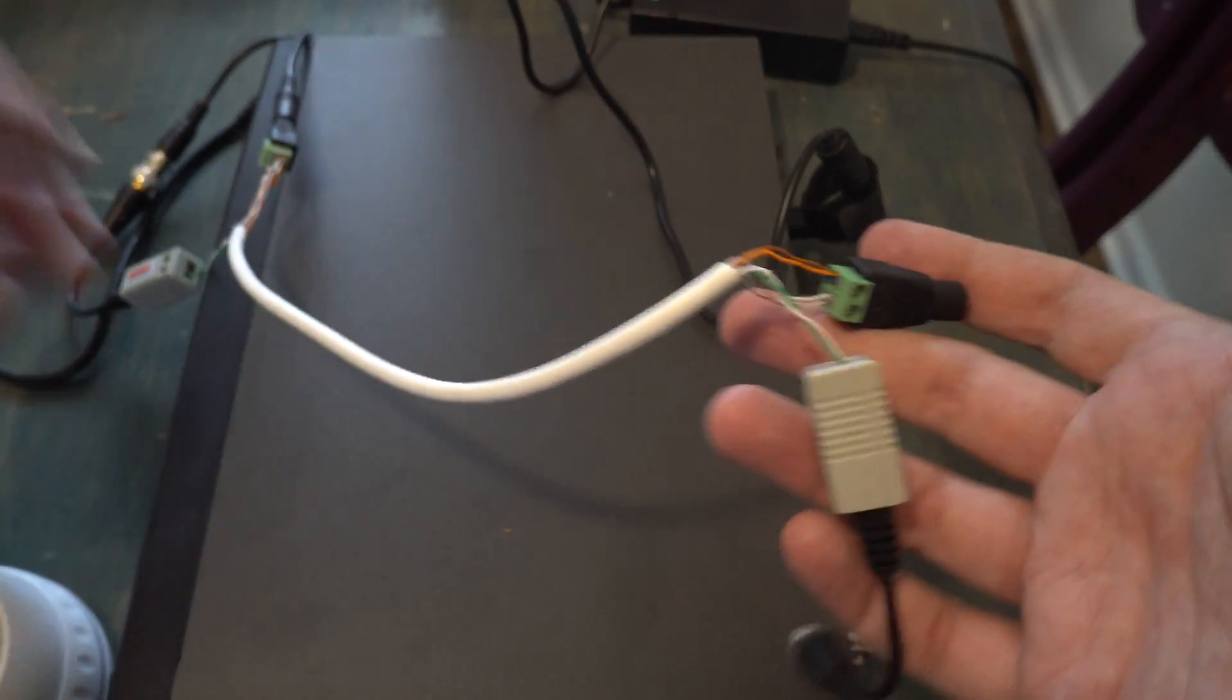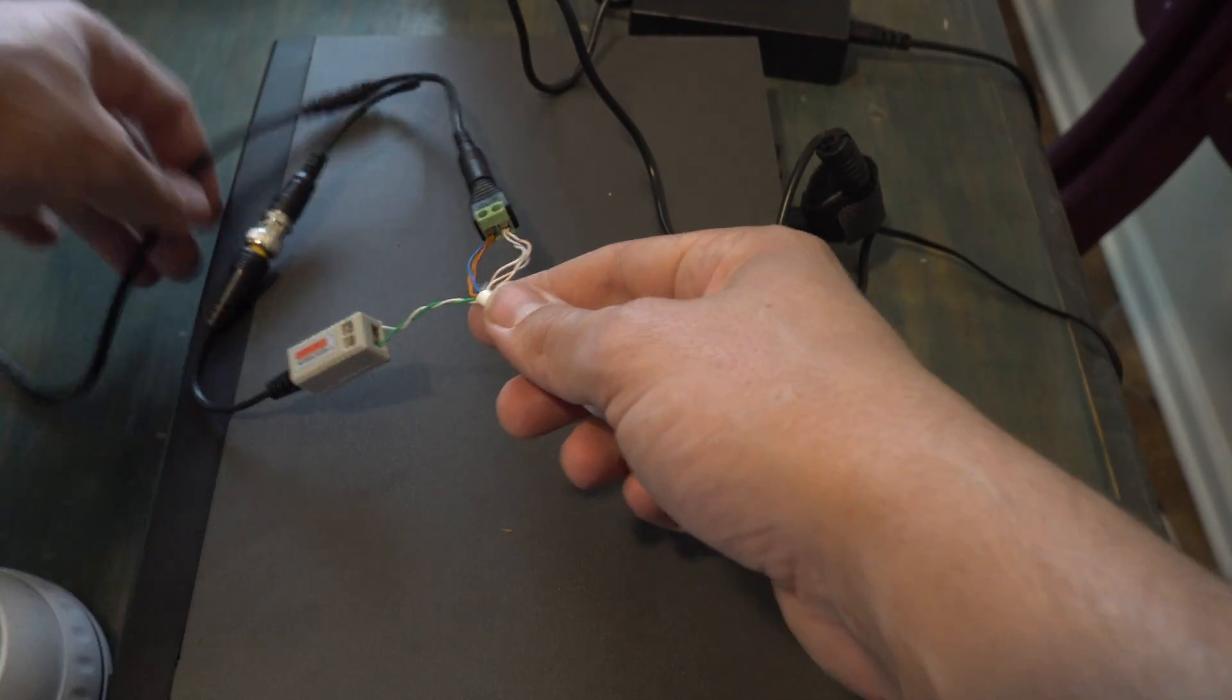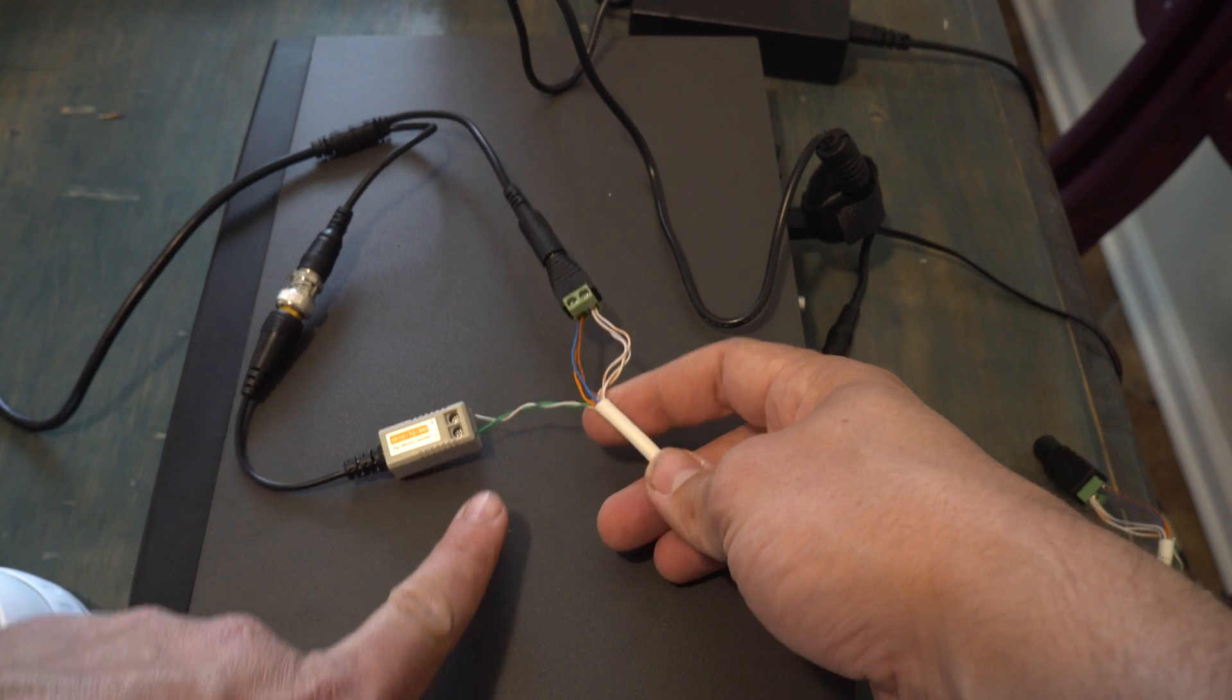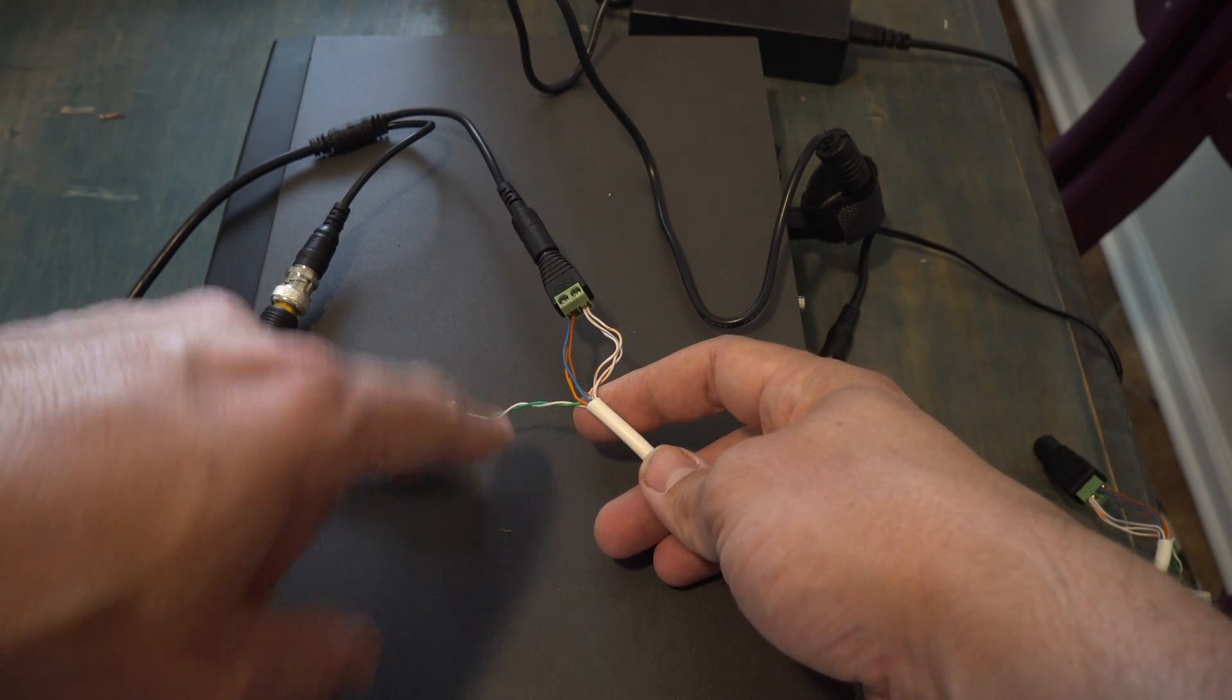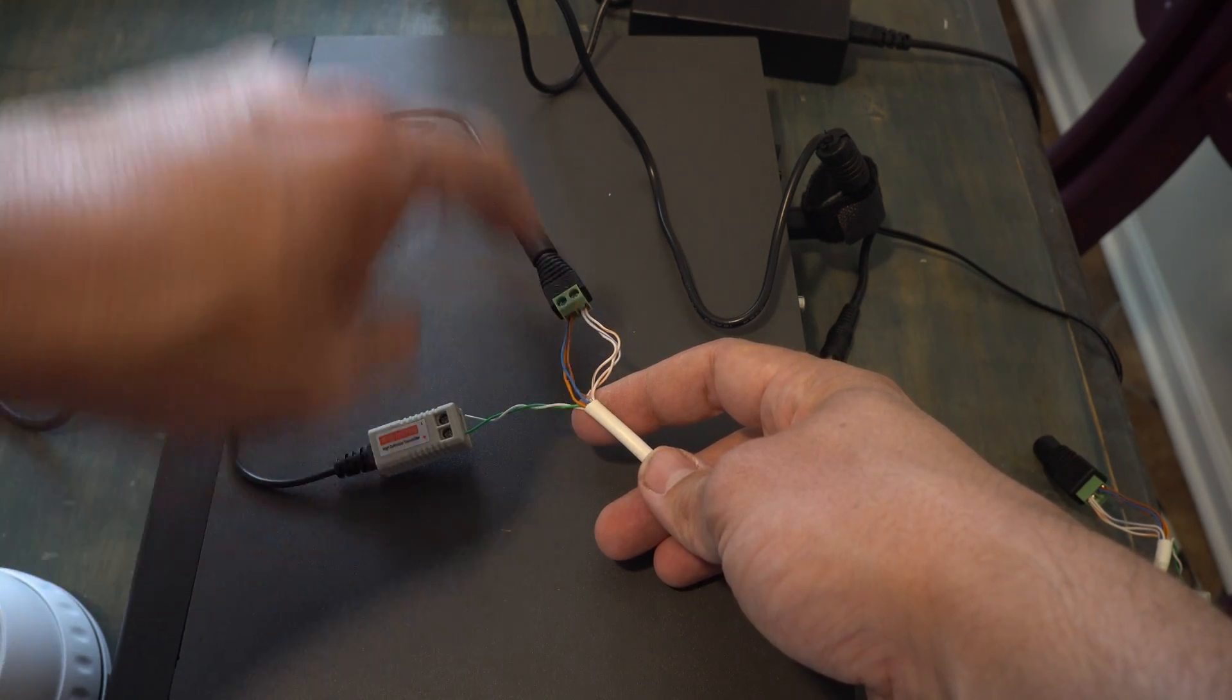On one side you have this, and then the opposite side that plugs into the camera, you do the same thing. The green goes to video, and the other colors go to power.